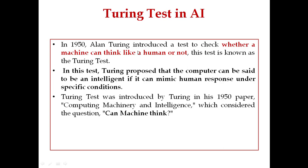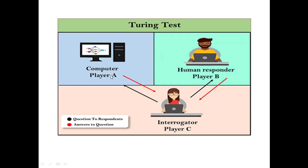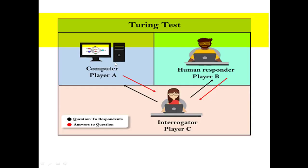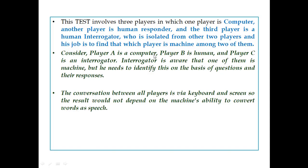Now look at this figure. You will see Player A, Player B, and Player C. Player A is a computer, Player B is a human responder, and Player C is the interrogator. This test involves three players: a computer, a human responder, and a human interrogator. The human interrogator is isolated from the other two players.